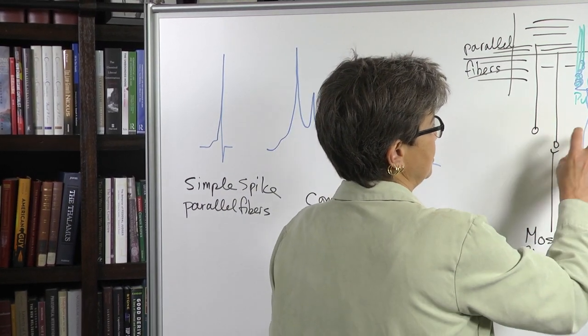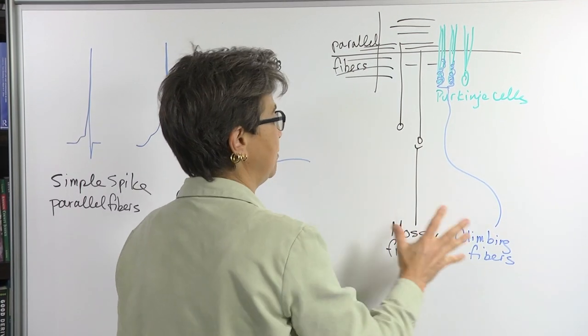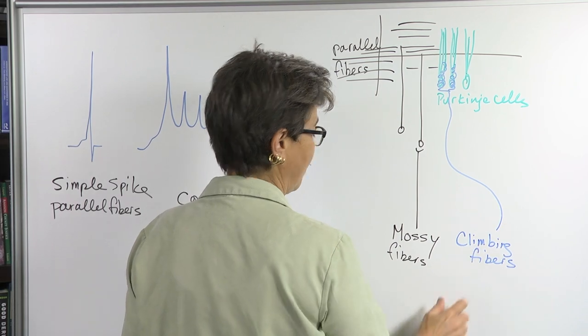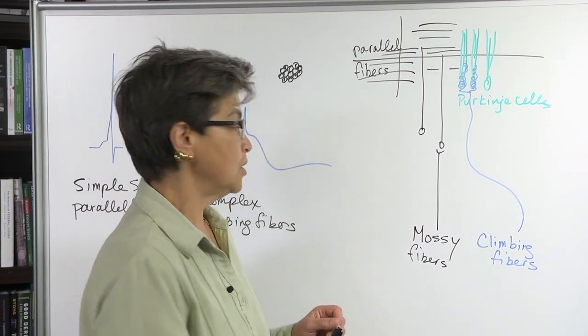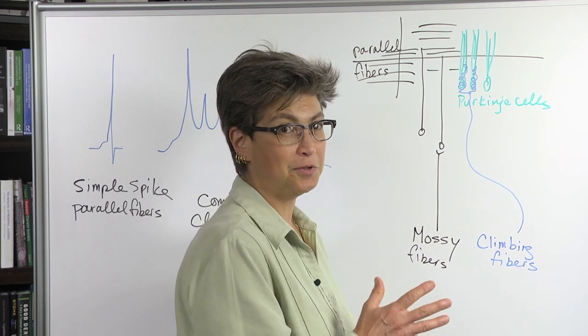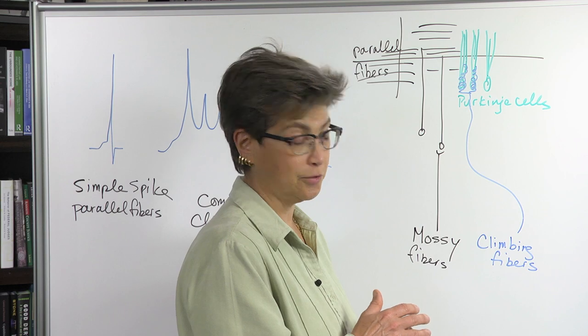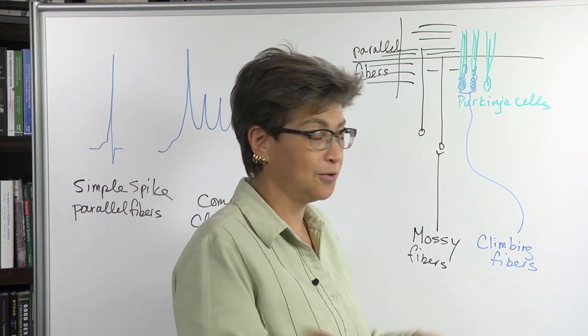Okay. And that is in stark contrast to the other type of input from the other anatomical type of input, which is from climbing fibers. And climbing fibers only come from the inferior olive. So that, and you can remember that, okay, this is my second favorite mnemonic, which is that climbing fibers come from an olive, olive tree, olive tree, climbing. Okay.